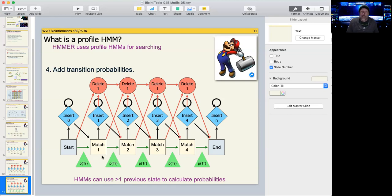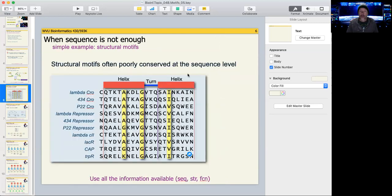But this combination of probabilities, matches, insertions, deletions, and transitions allow us to model things like structural conservation.